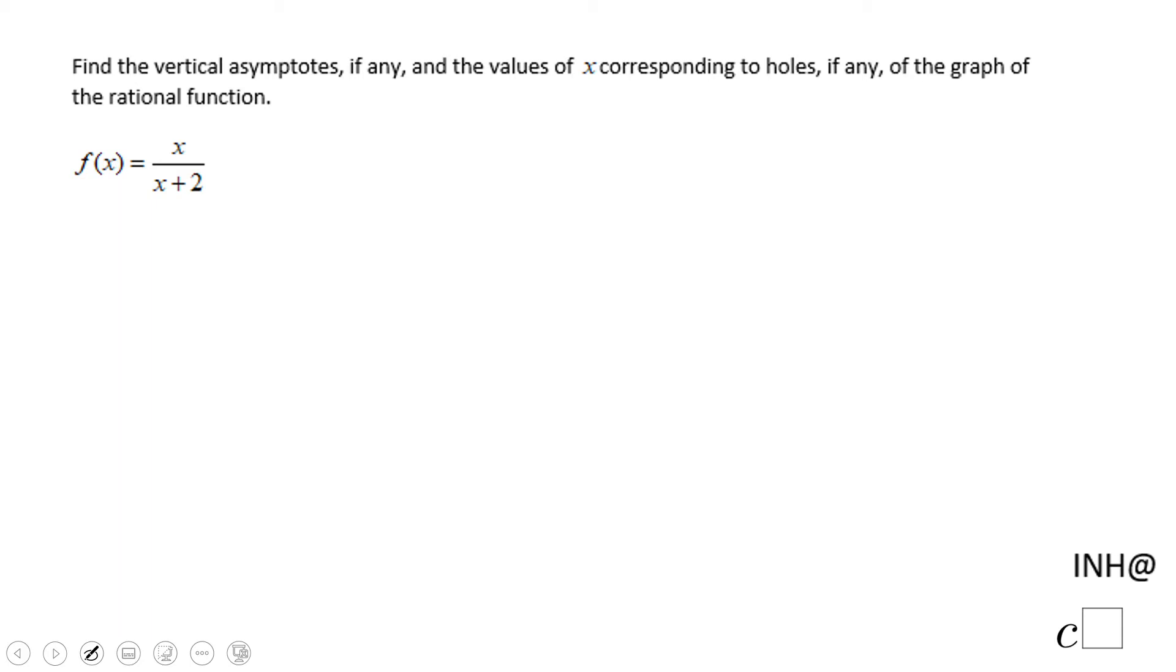Welcome or welcome back to I Need Help at C Square. In this example we have a rational function and we need to find a vertical asymptote, if any, and also we may have something that we call a hole.